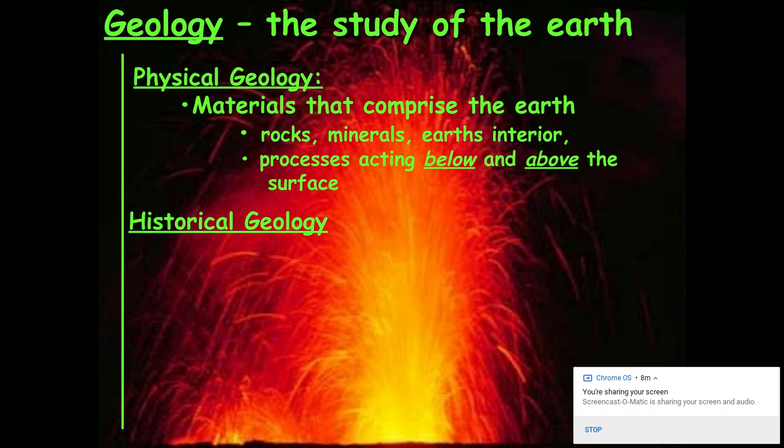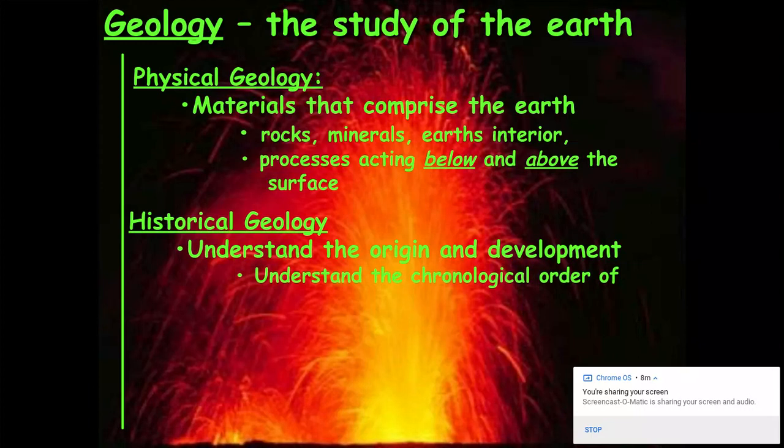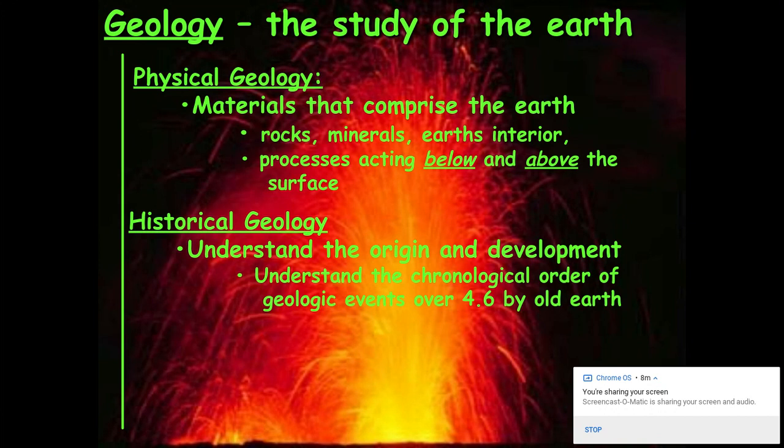The other aspect of geological science would be historical geology. Historical geology attempts to understand the origin and the development of the Earth. Scientists like to look at the Earth in some type of chronological order, looking at the events that have taken place over the last 4.6 billion years. The modern belief with respect to the age of our Earth today is about 4.6 billion years, and this is defined by what we call the geologic time scale.